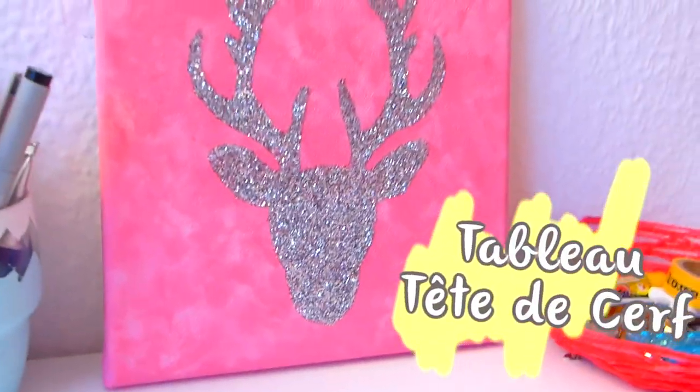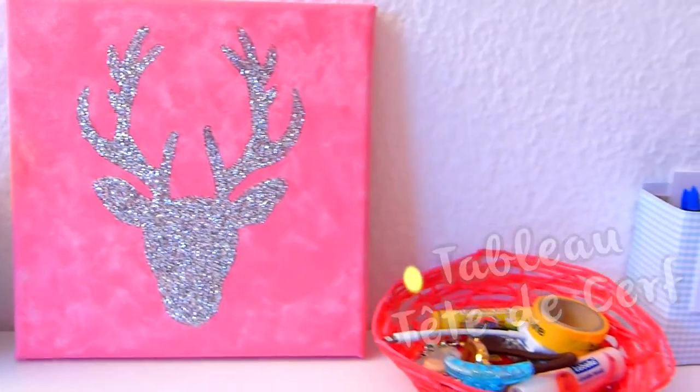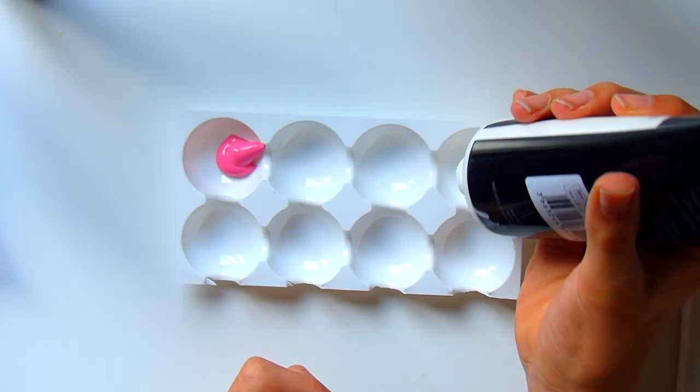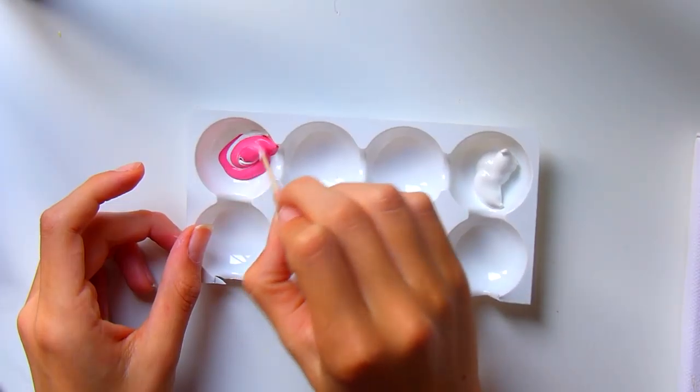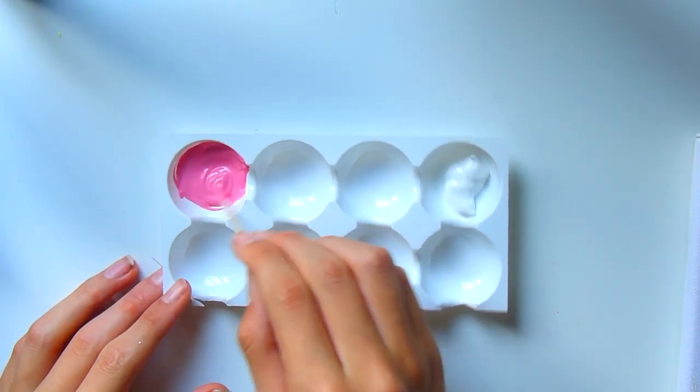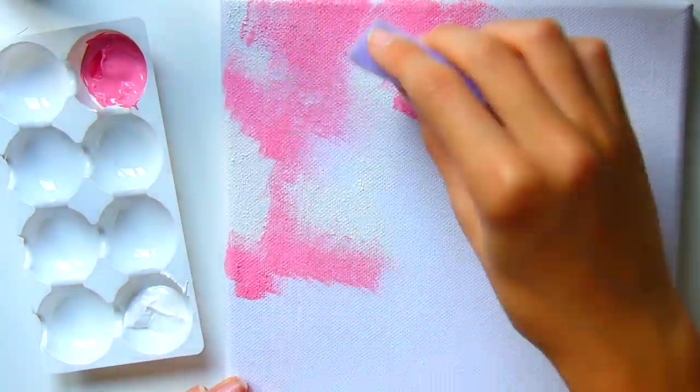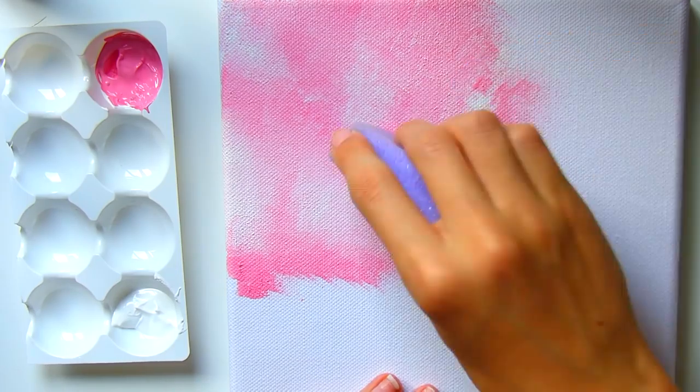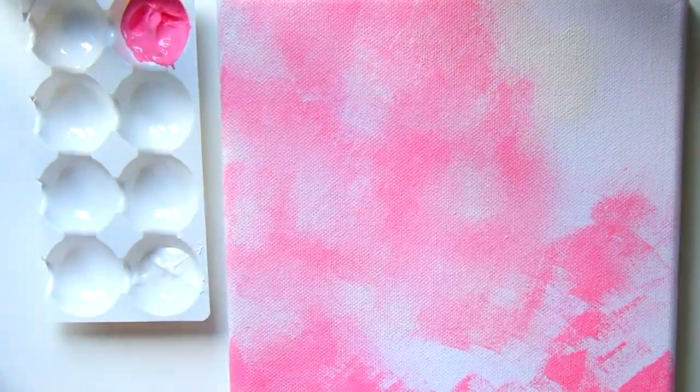Le premier DIY est un tableau tête de cerf. Pour cela on va d'abord prendre les couleurs de notre choix. Moi j'ai opté pour un rose pâle et un blanc. J'ai fait un tableau à 2 couleurs mais vous pouvez en choisir 3 ou plus. On va prendre une éponge, vous pouvez aussi prendre un pinceau éponge, et on va venir prendre une à une les 2 couleurs et les tamponner un peu partout sur la toile pour former des petits dégradés.